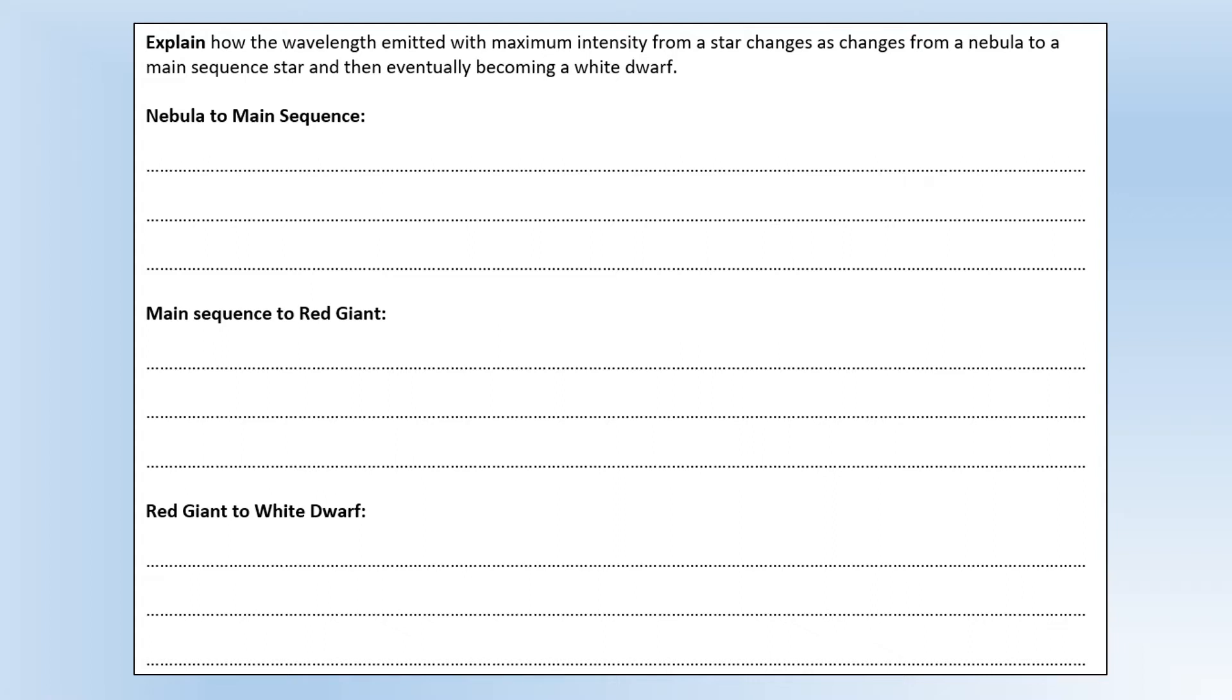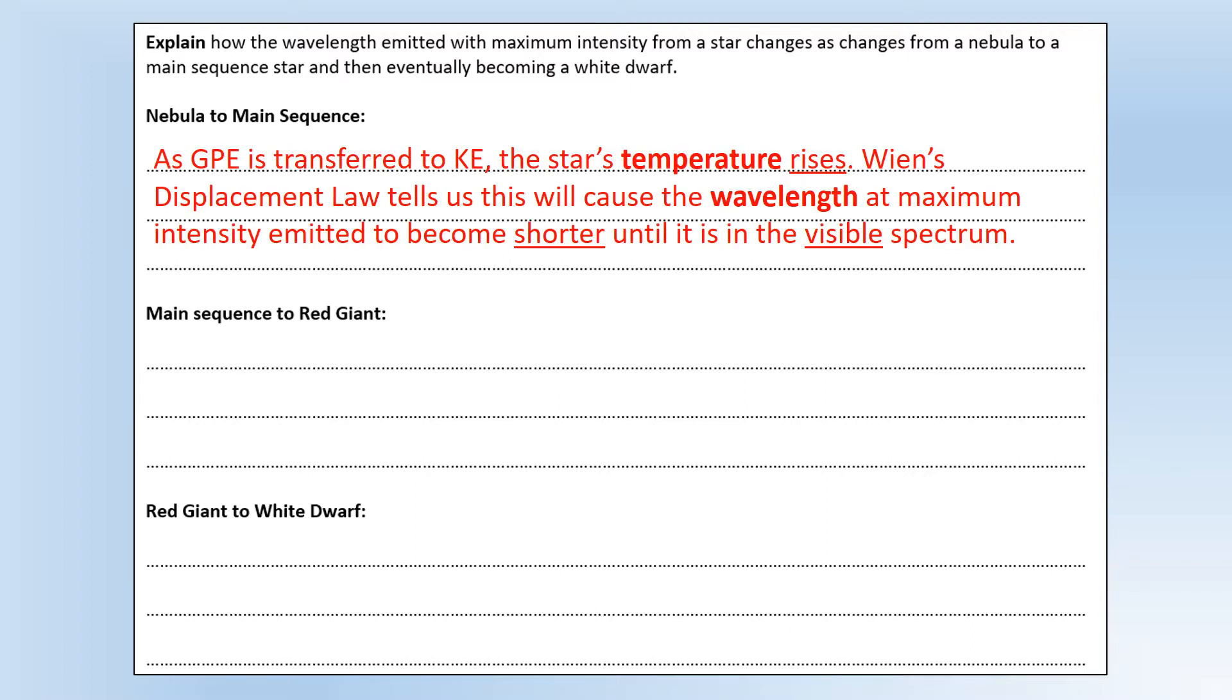Okay, so the first thing we're going to look at is formation of stars. Explain how the wavelength emitted with maximum intensity from a star changes as the star changes from a nebula to a main sequence star and then eventually becoming a white dwarf. So starting with a nebula, it's going to be emitting a very long wavelength because it's very cold. But as it comes together and its gravitational potential energy is transferred to kinetic energy, its temperature rises. Wien's displacement law tells us that will cause the wavelength to become shorter.